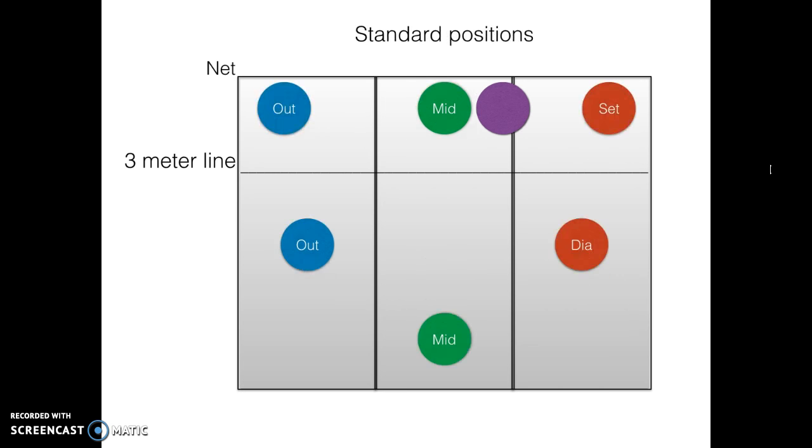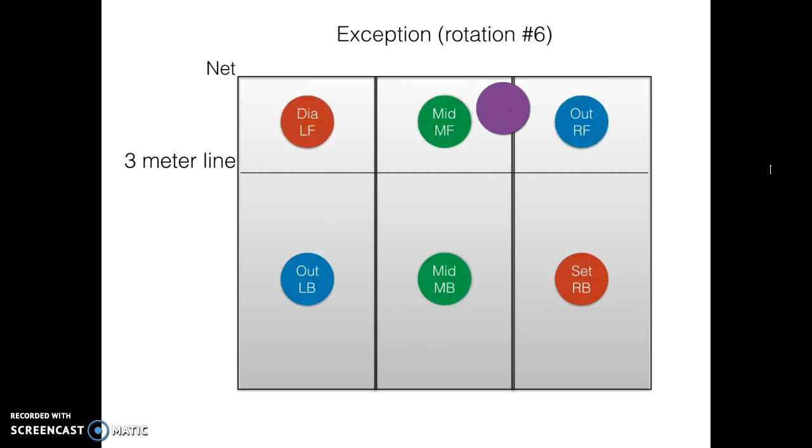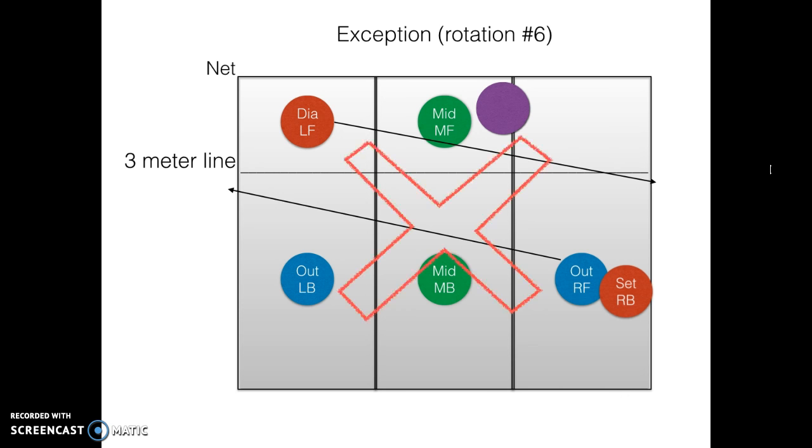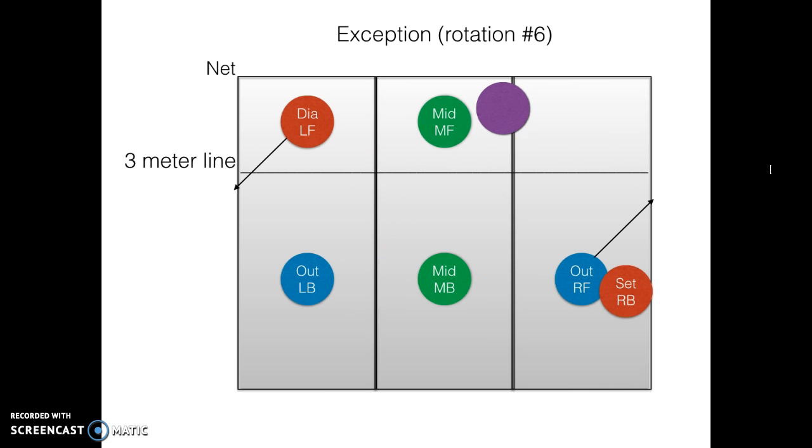However, there is one exception to this rule: that's rotation six that I just showed you. As you can see, when we receive the service, the diagonal would have to go to the right after the service and the outside would have to go to the left, but that's a long walk and if the service is quick they won't have time to get ready to attack. So instead, what we're going to do is we're going to have them stay on their own side of the court and they will be ready to attack.